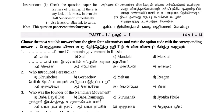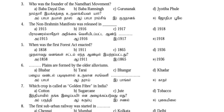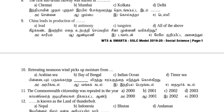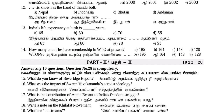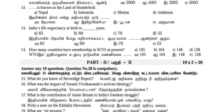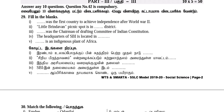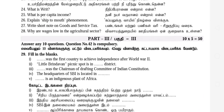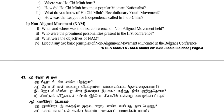If you look at this question paper: Part 1 is 14 one-mark questions. In the public question, one question is Tamil or English. Part 2 has 2-mark questions, and the 28th question is compulsory. Part 3 has 5-mark questions, with a question at the 40th question.